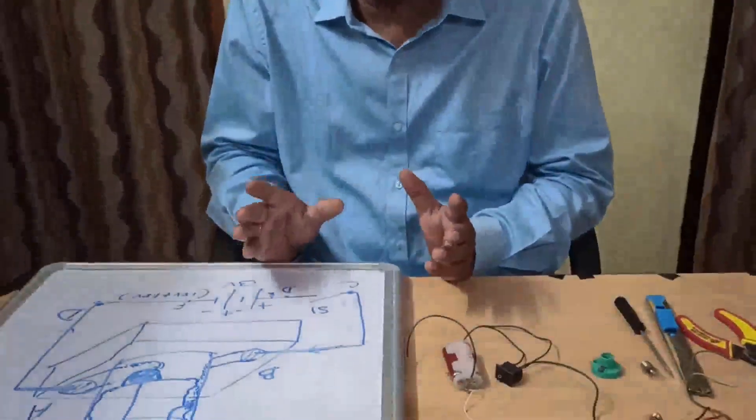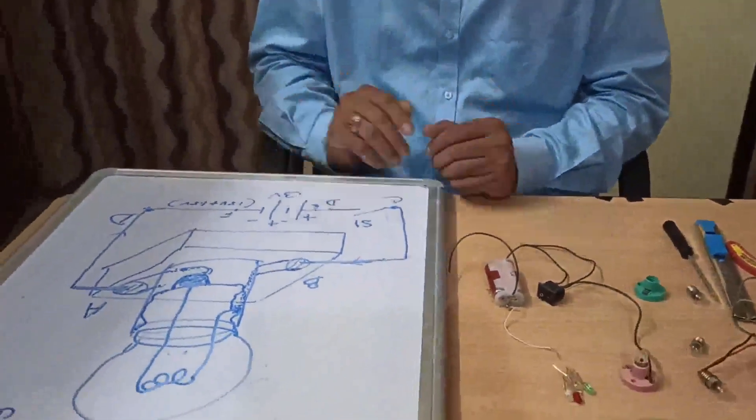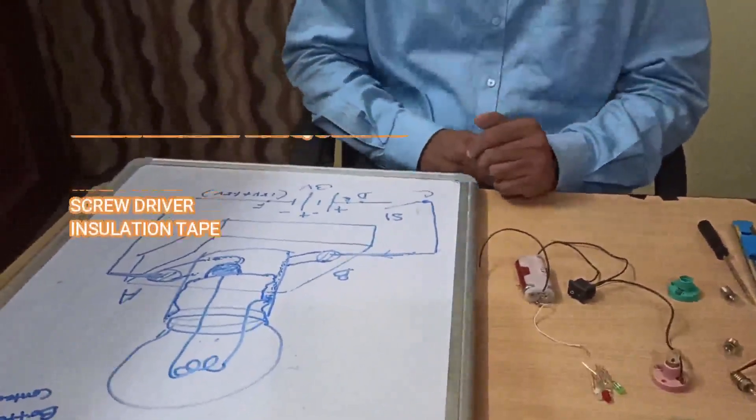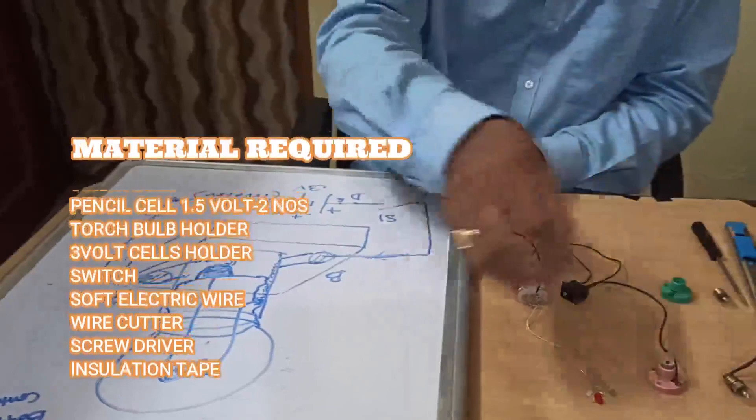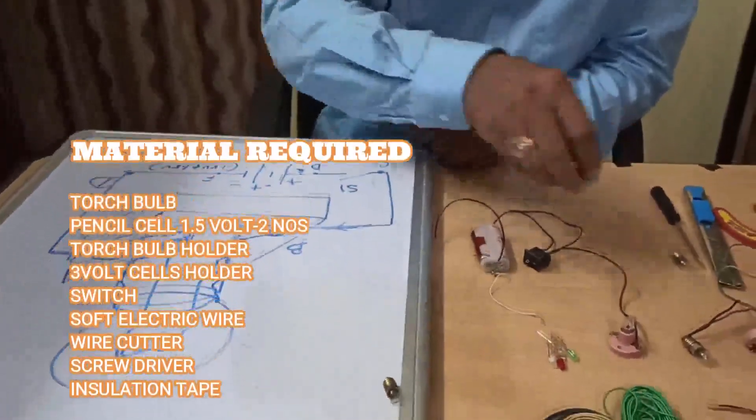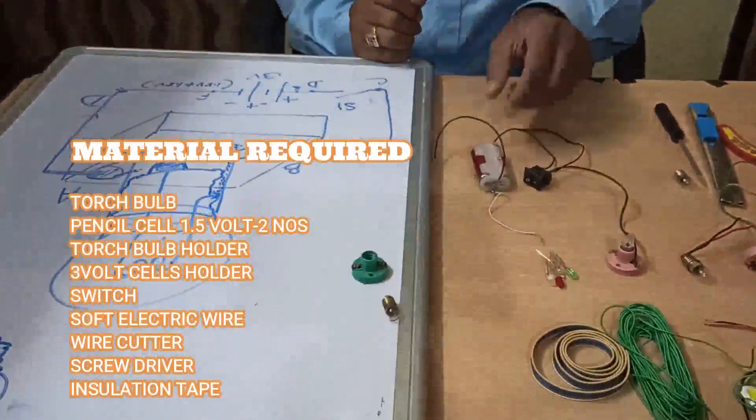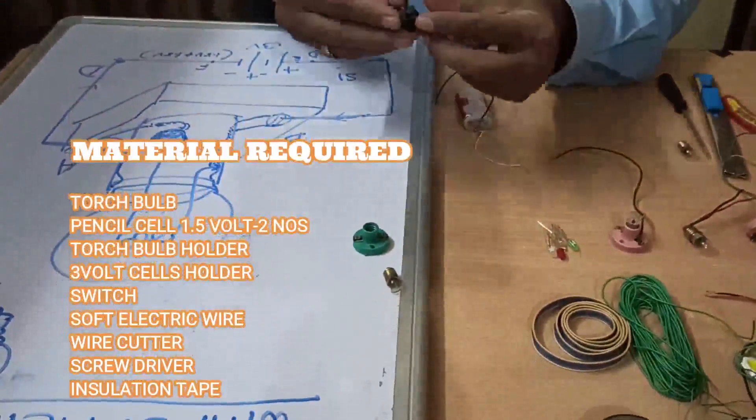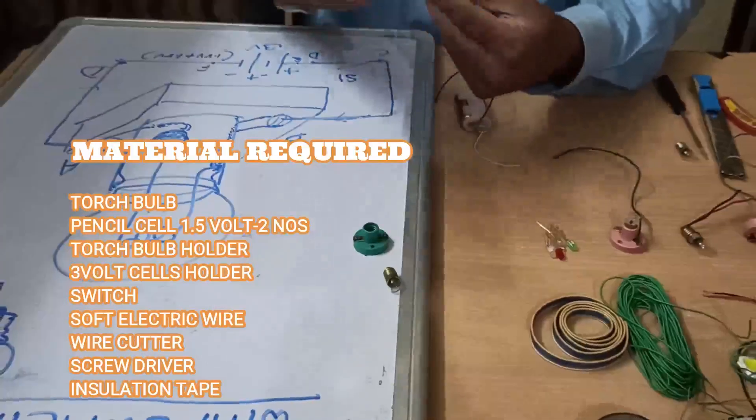It is a simple circuit, a lamp or torch bulb lamp or torch light. For this we require bulb, holder, simple switch - it has two terminals and I have already soldered.